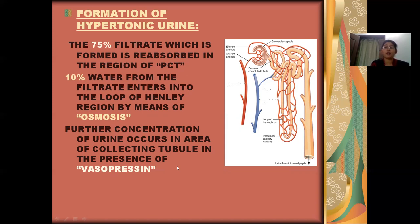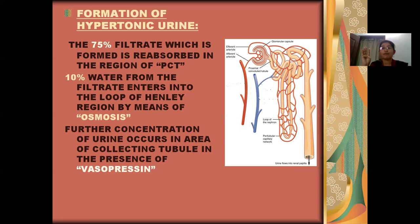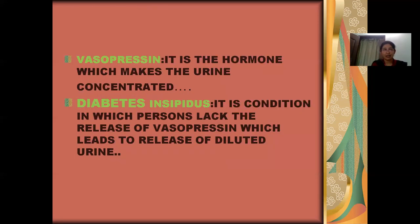So the mechanism of urine formation is divided into four stages: first is glomerular filtration, second is tubular reabsorption, third is tubular secretion, and fourth is formation of hypertonic urine. This hypertonic urine is formed in the presence of the hormone vasopressin. Vasopressin is a hormone which makes the urine concentrated.